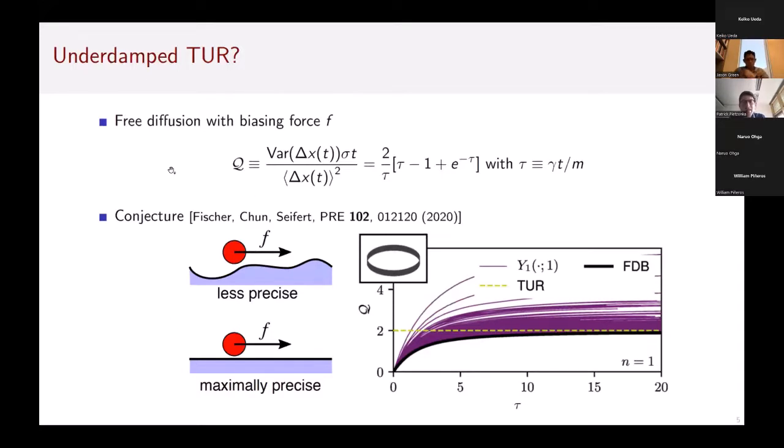There was some interesting observation that there should still be an underdamped TUR. This is based on the observation that one can calculate the uncertainty product q exactly for free underdamped diffusion subject to a biasing force. I show here that uncertainty product as a function of the time interval. For short time intervals you have a ballistic regime, but in the long time limit it still gets the familiar right hand side of two. This is shown here in black.